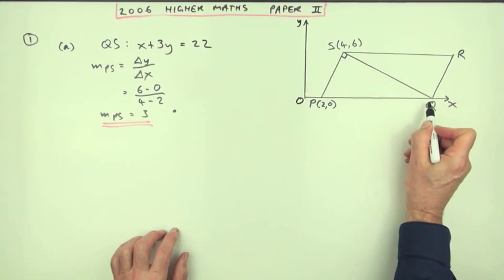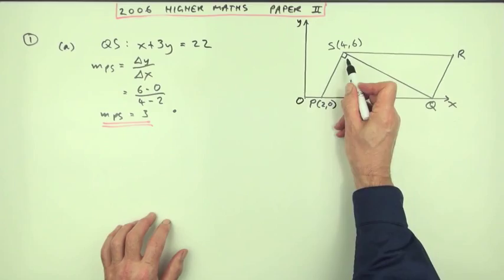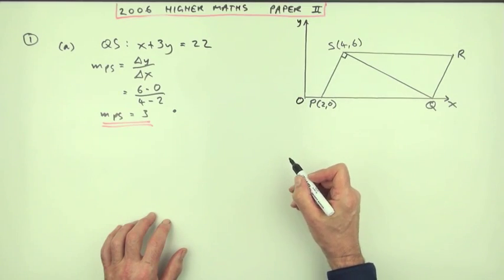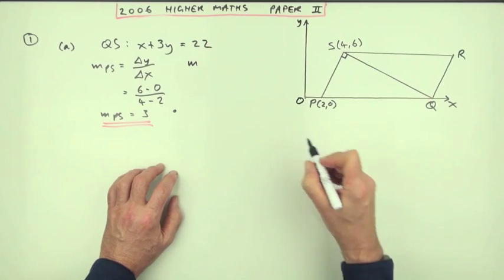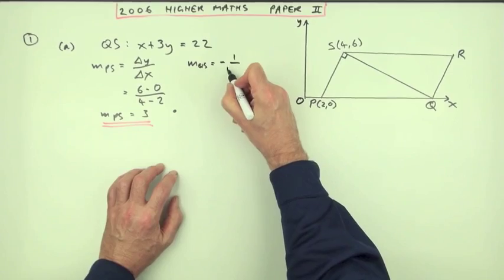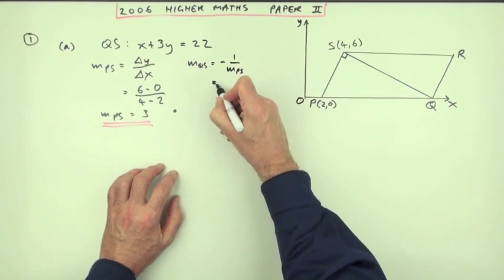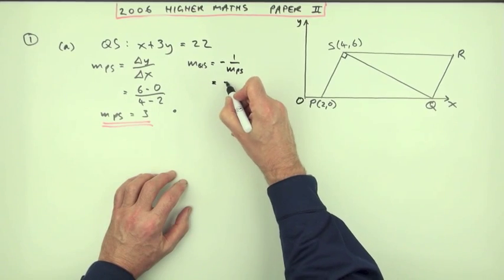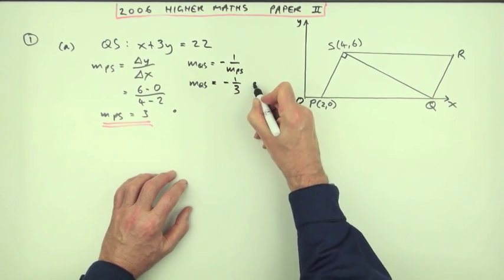Now, the gradient of SQ, or QS it says, can be found from that because it's at right angles. The product of the gradients is negative 1. You probably don't need to mention that, but I think I'll just put that down by way of explanation. The gradient of the line QS is the negative of the reciprocal. If you divide negative 1 by the gradient of PS, you'll get the answer. So that'll be negative 1 third. That's the second mark.